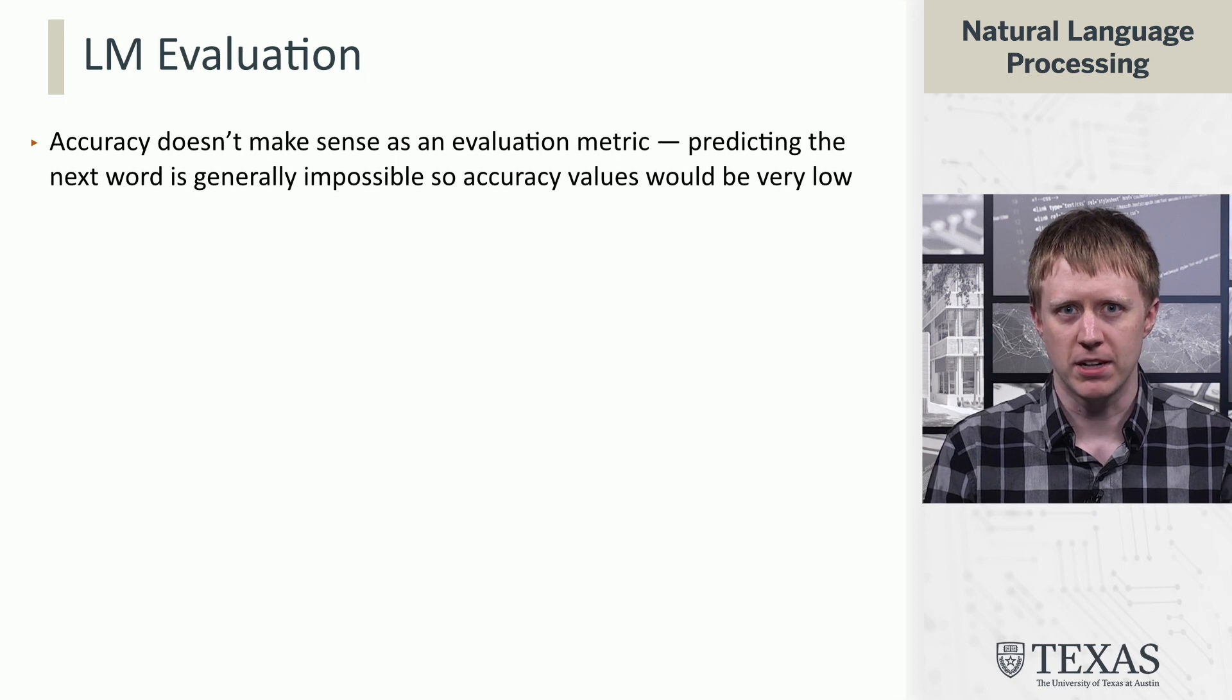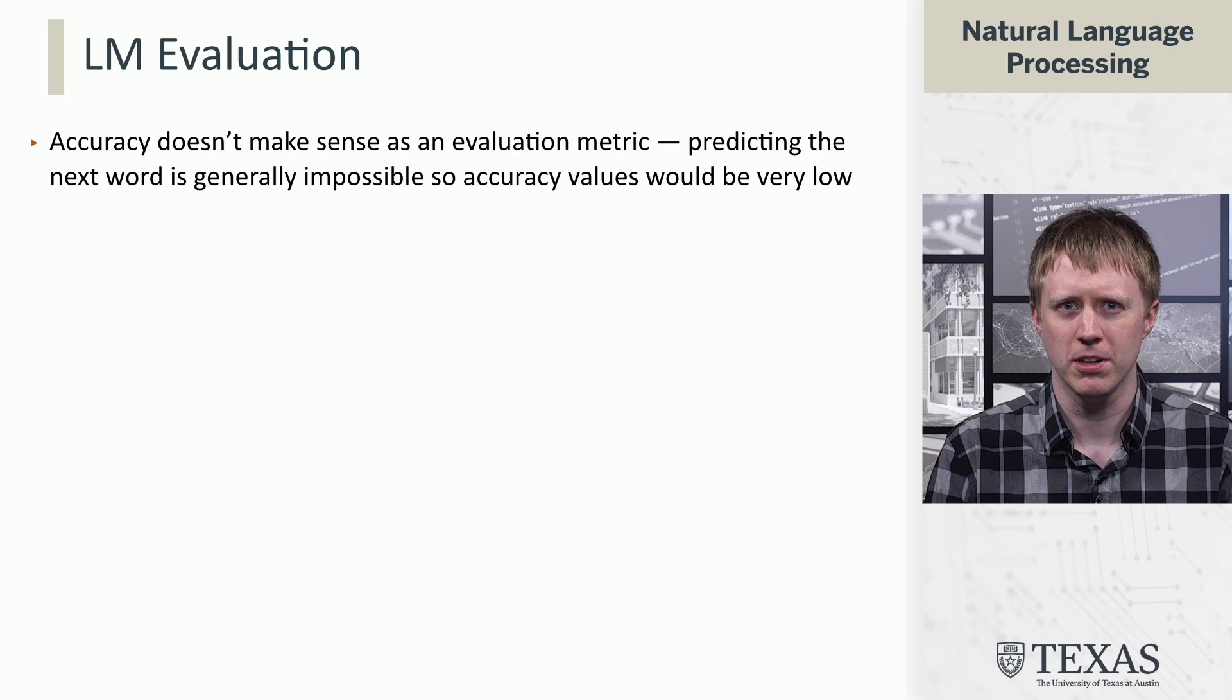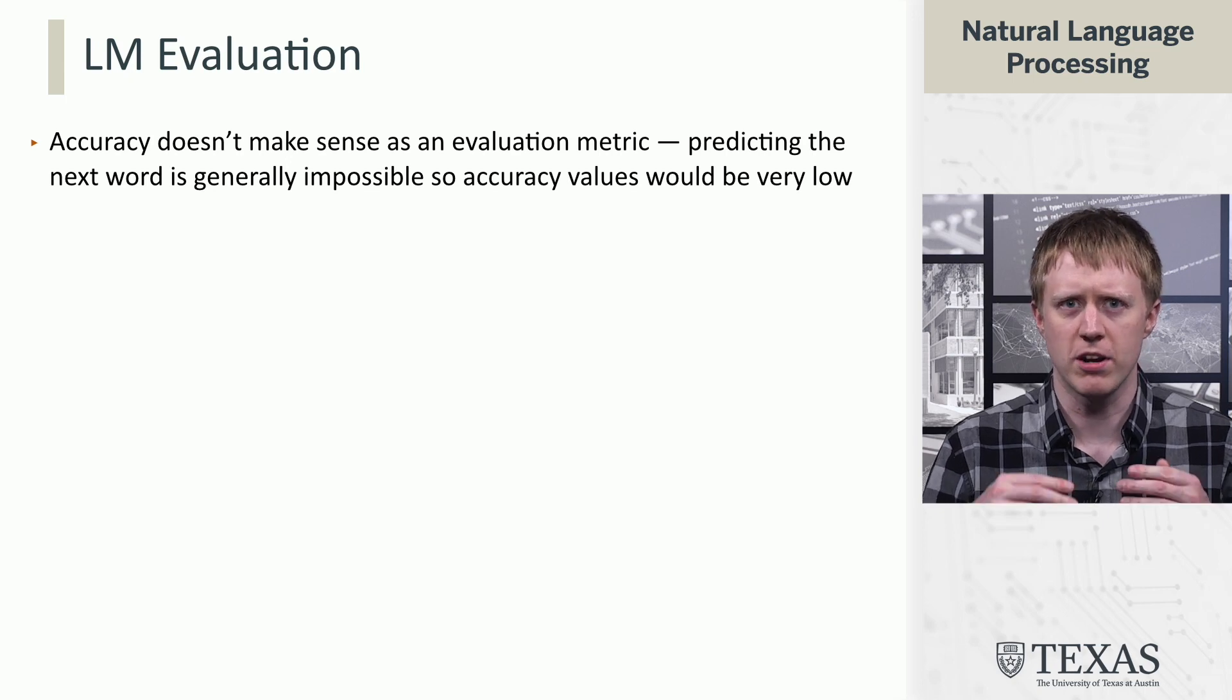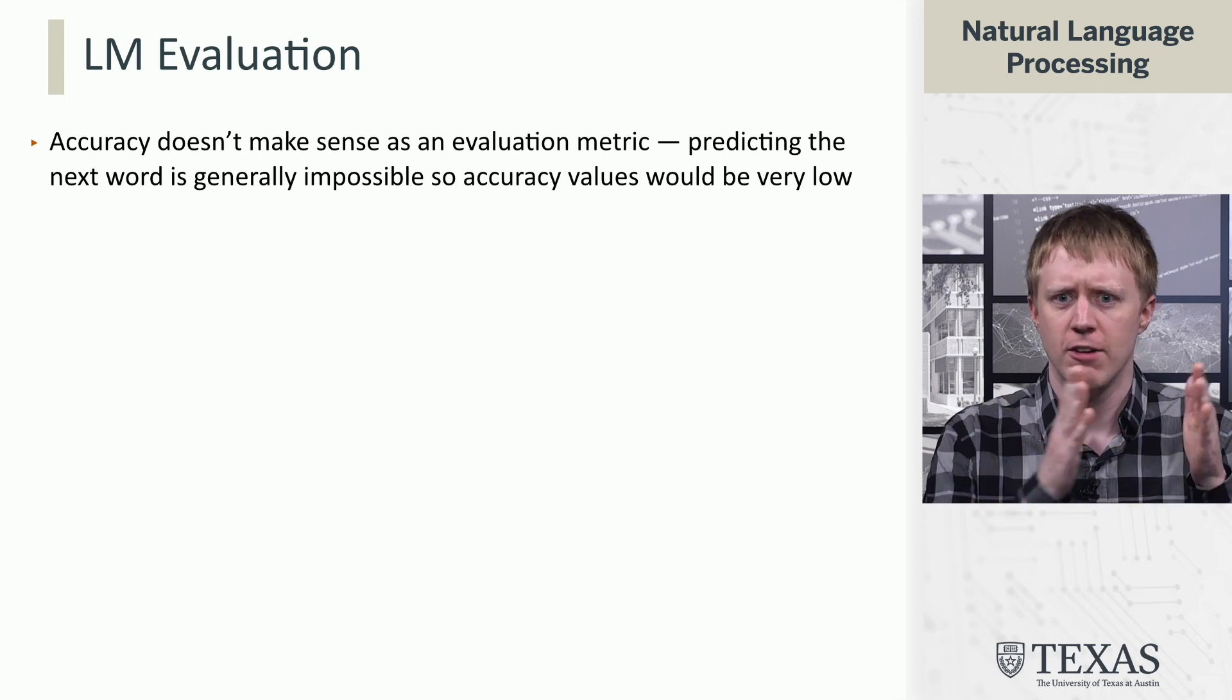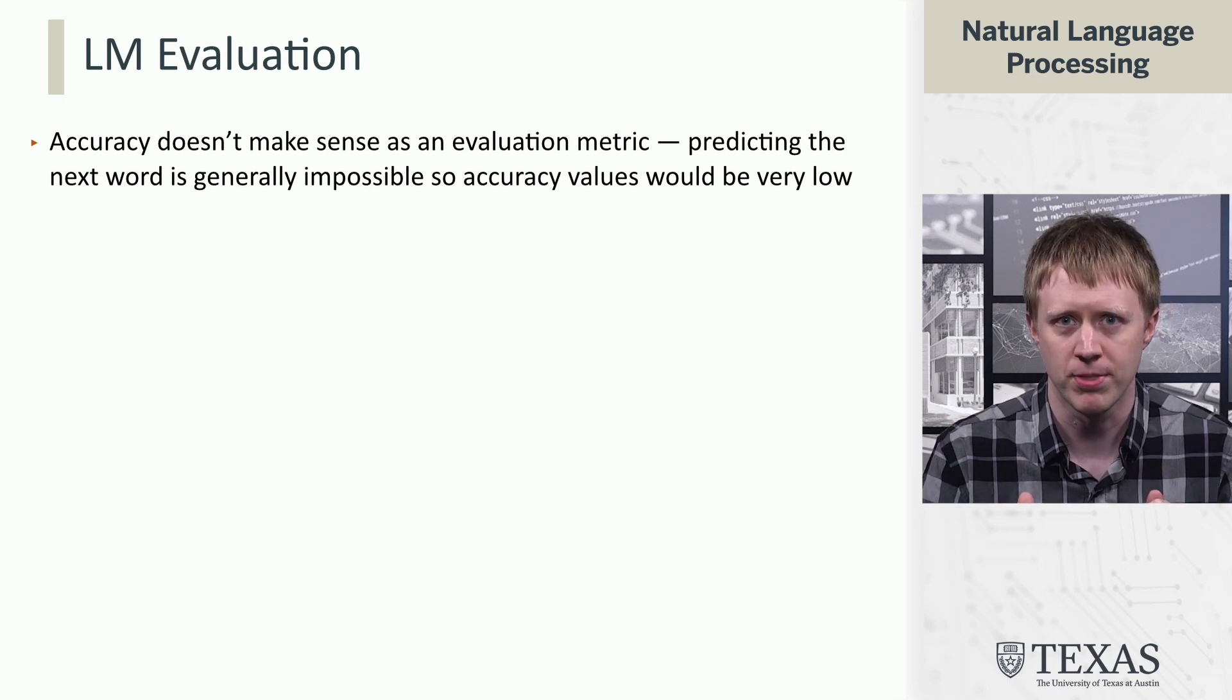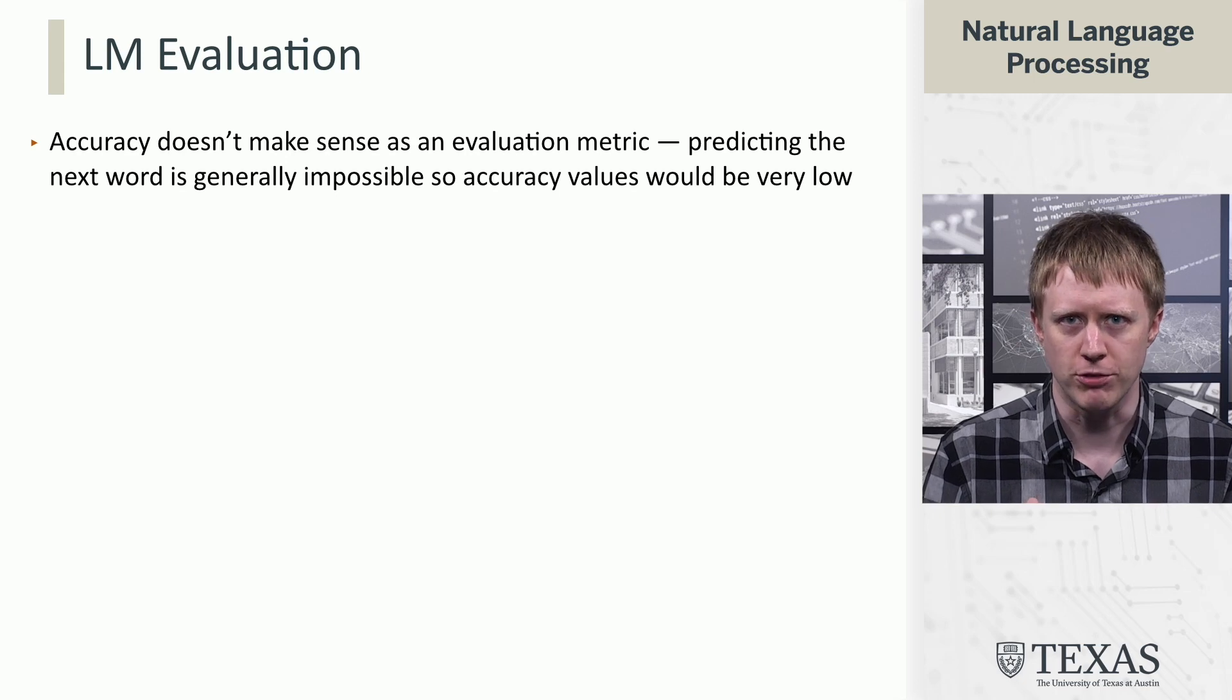But accuracy doesn't really make much sense. We've talked about how language modeling is sort of impossible in the sense that you never really know what word is coming next. You can try to just place a probability distribution over reasonable possibilities. So it'd be a little weird to talk about this language model got 5% accuracy and then going up to 5.5% accuracy is like a great advance. So we're going to need a different metric.